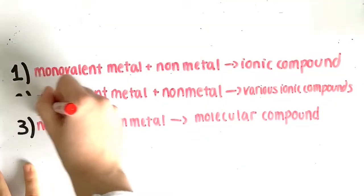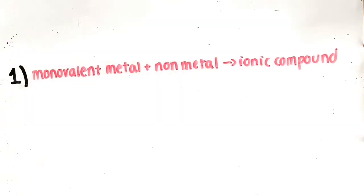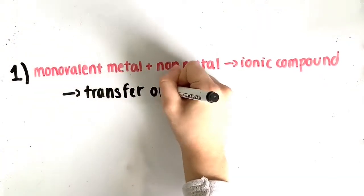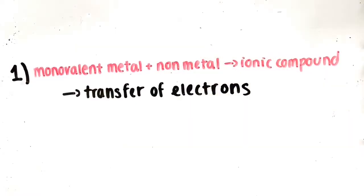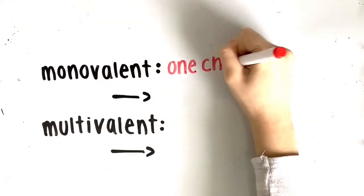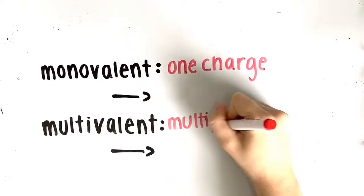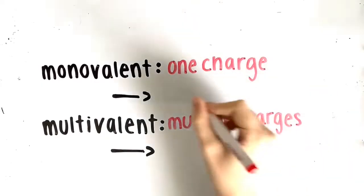Firstly, a monovalent metal reacts with a nonmetal to form an ionic compound. During this reaction, there is a transfer of electrons. A metal that is monovalent means that it has one set charge, as opposed to a multivalent metal.